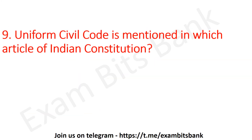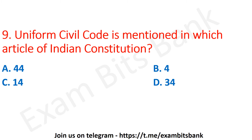Uniform Civil Code is mentioned in which article of the Indian Constitution? The options are 44, 4, 14, or 34. The correct answer is option A — Article 44. Article 44 comes under the Directive Principles of the Constitution and deals with the Uniform Civil Code.